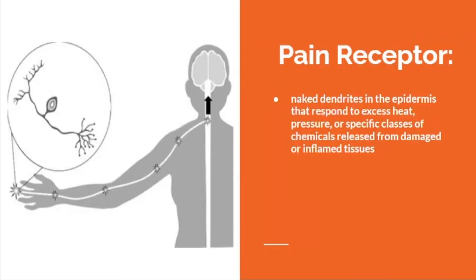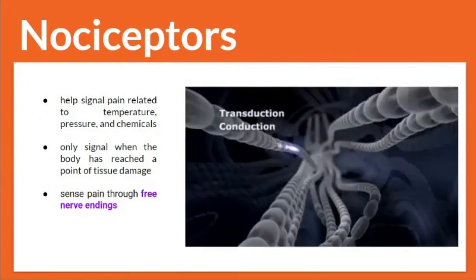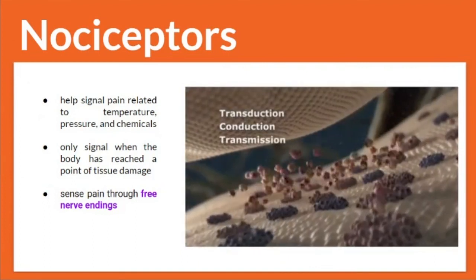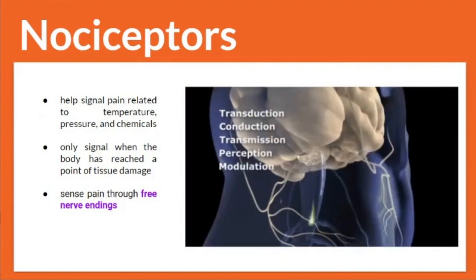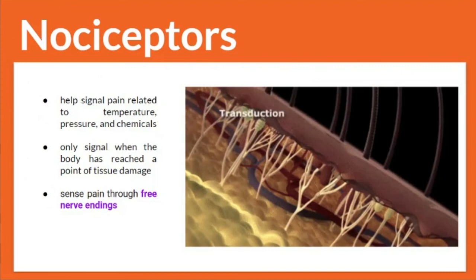For the pain receptor: these are naked dendrites in the epidermis that respond to excess heat, pressure, or specific classes of chemicals released from damaged or inflamed tissues. While thermoreceptors handle normal temperature ranges, extreme heat or tissue damage activates pain receptors. These are called nociceptors — they signal pain related to temperature, pressure, and chemicals, and only activate when the body has reached the point of tissue damage, sensing pain through free nerve endings.